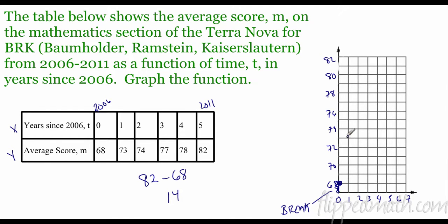1, 73 is going to be right here. 2, 74 is going to be here. 3, 77 is going to be here. 4, 78 will get you up to here. And then last but not least, 5, 82 is going to get you all the way up here. Now, you can tell this is real data because it doesn't go in a straight line. There's some gaps, there's some jumps and things like that. That's what happens when you have real data.